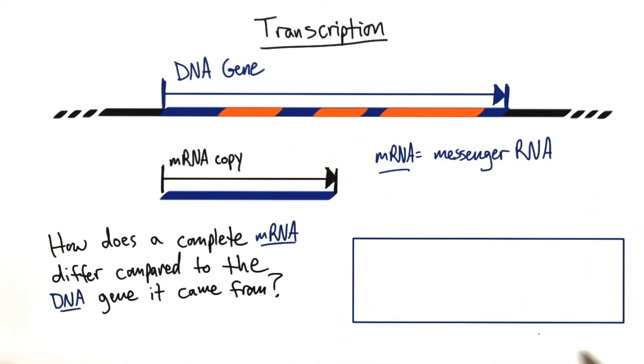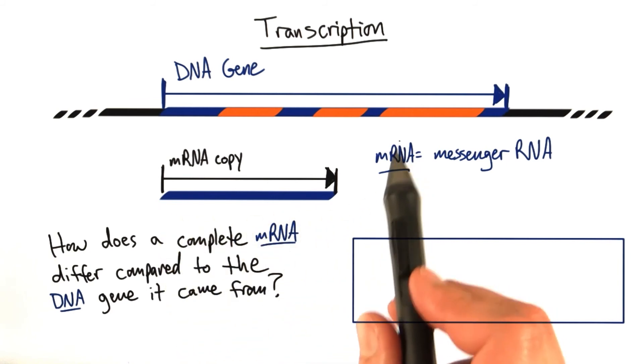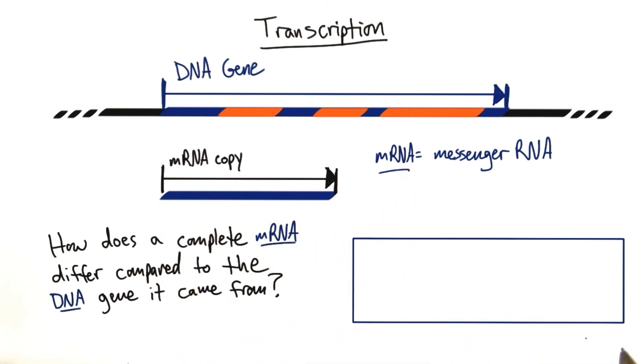I'm not going to give you any answers to choose from, just a text box. I'd like for you to organize your thoughts and try to answer this question. Don't worry about getting this right or wrong. Just look at the difference between the gene and the mRNA, and whatever difference you notice, I want you to write it down in the text box here.